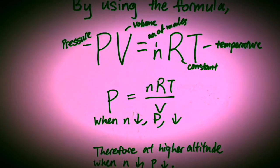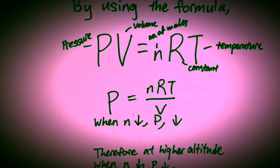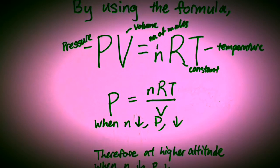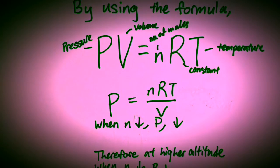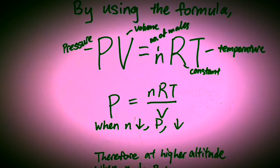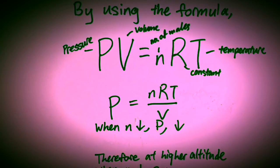When you make P the subject, the equation becomes pressure equals to nRT over the volume. When the nRT decreases, the pressure also decreases. Therefore, at a higher altitude, when the nRT decreases, so will the pressure.